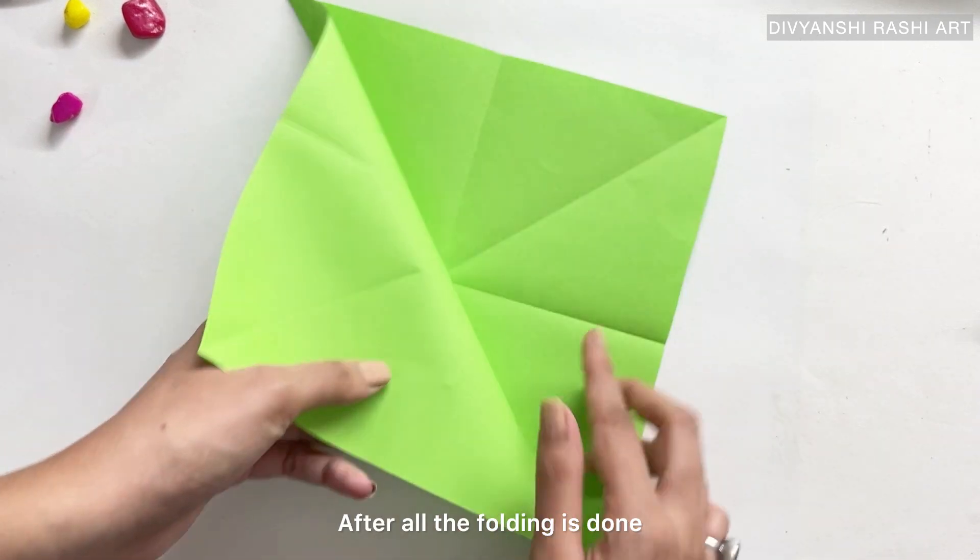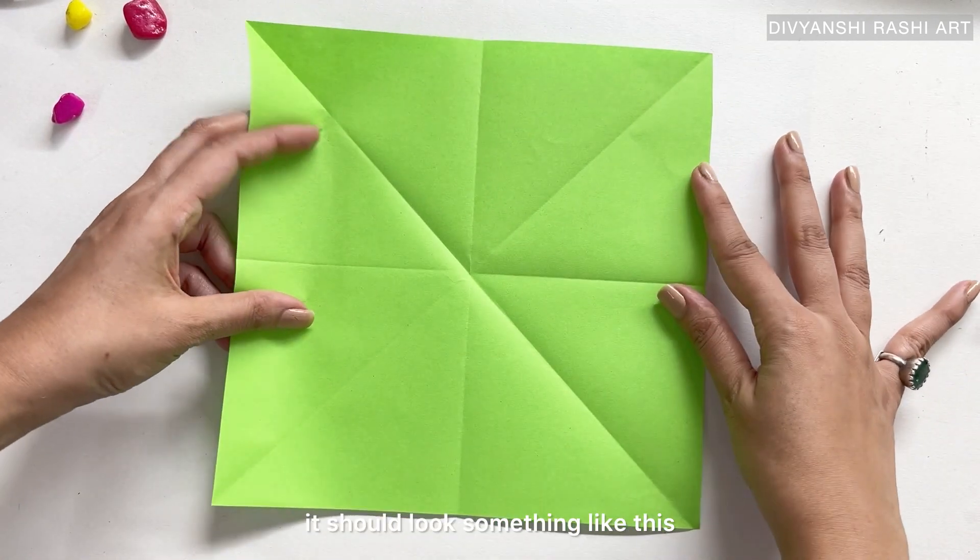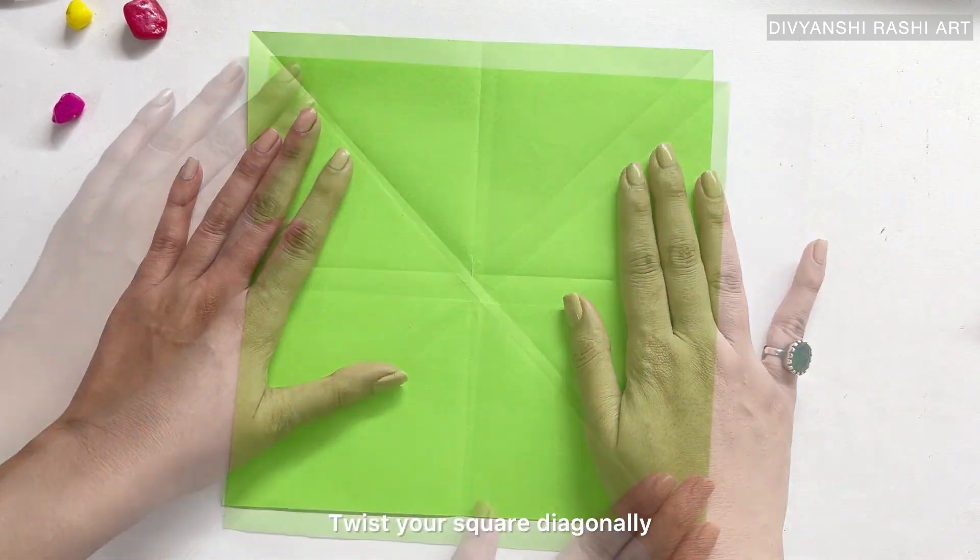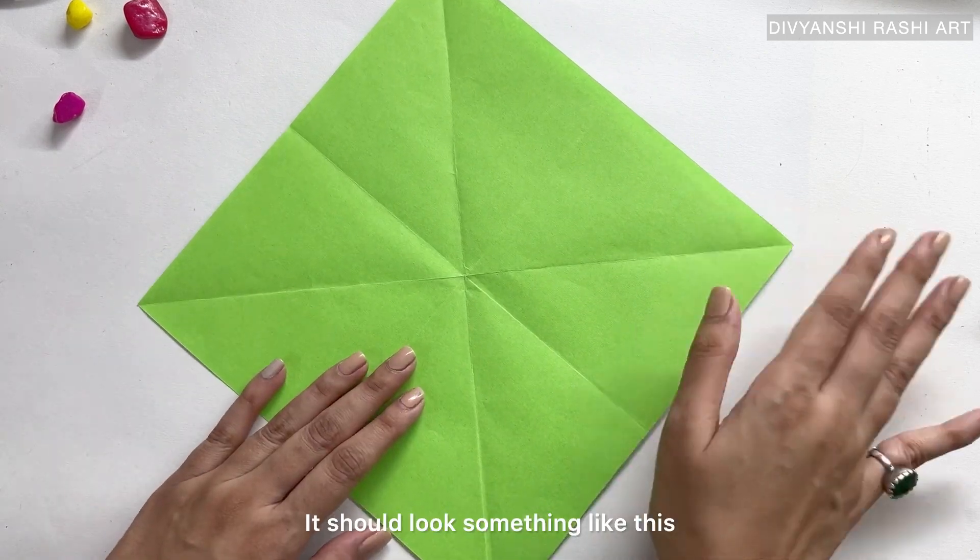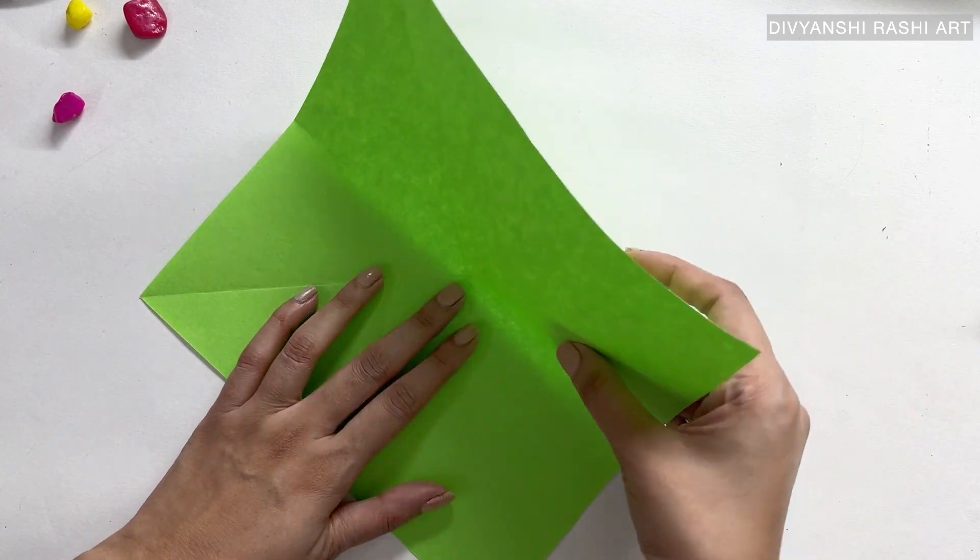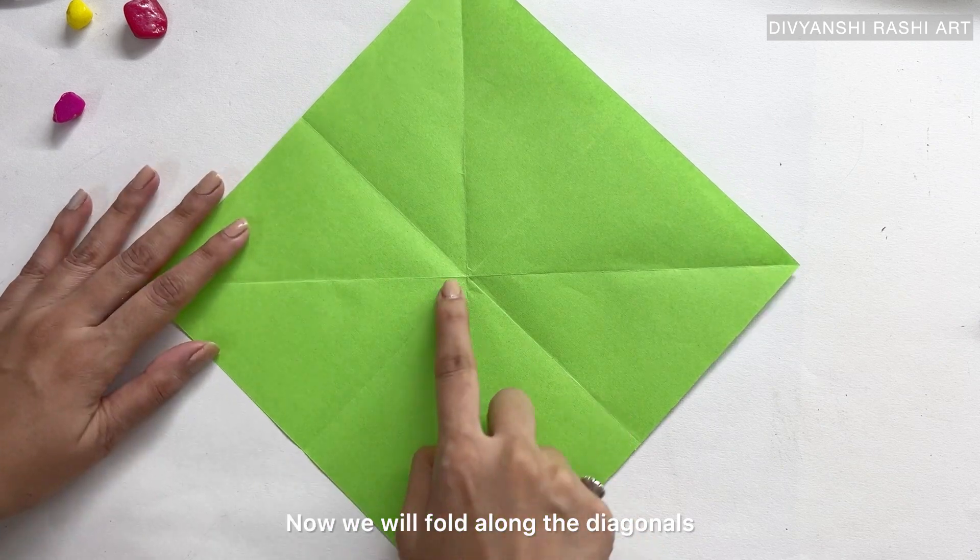After all the folding is done, it should look something like this. Twist your square diagonally—it should look something like this. Now we will fold along the diagonal square.